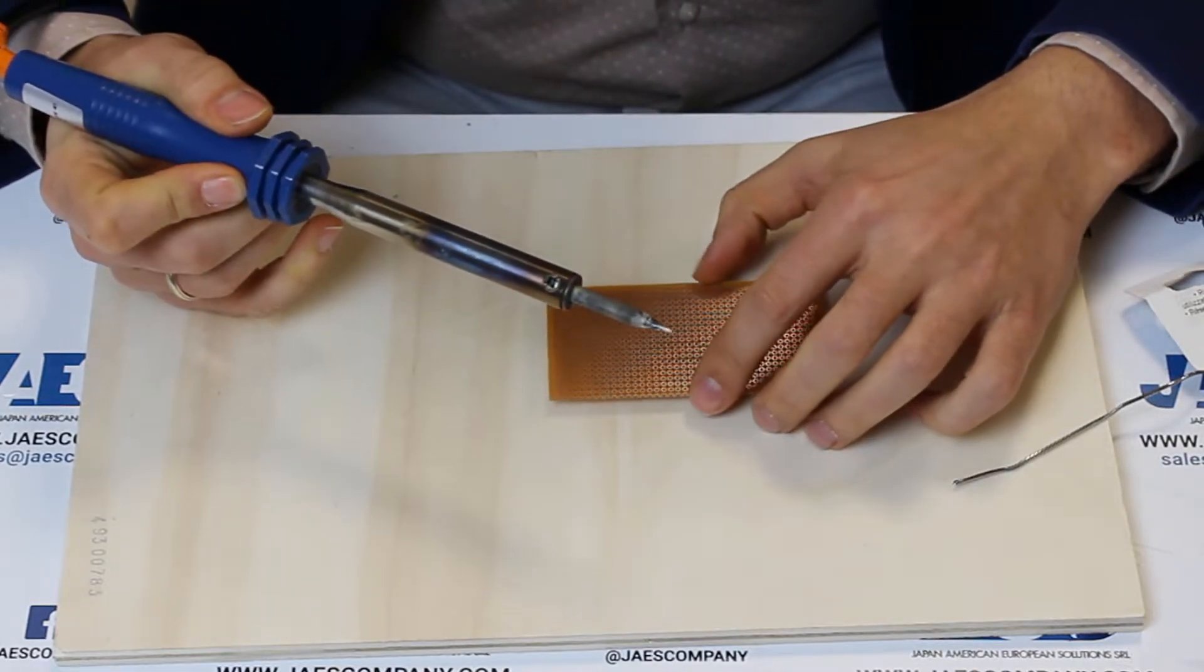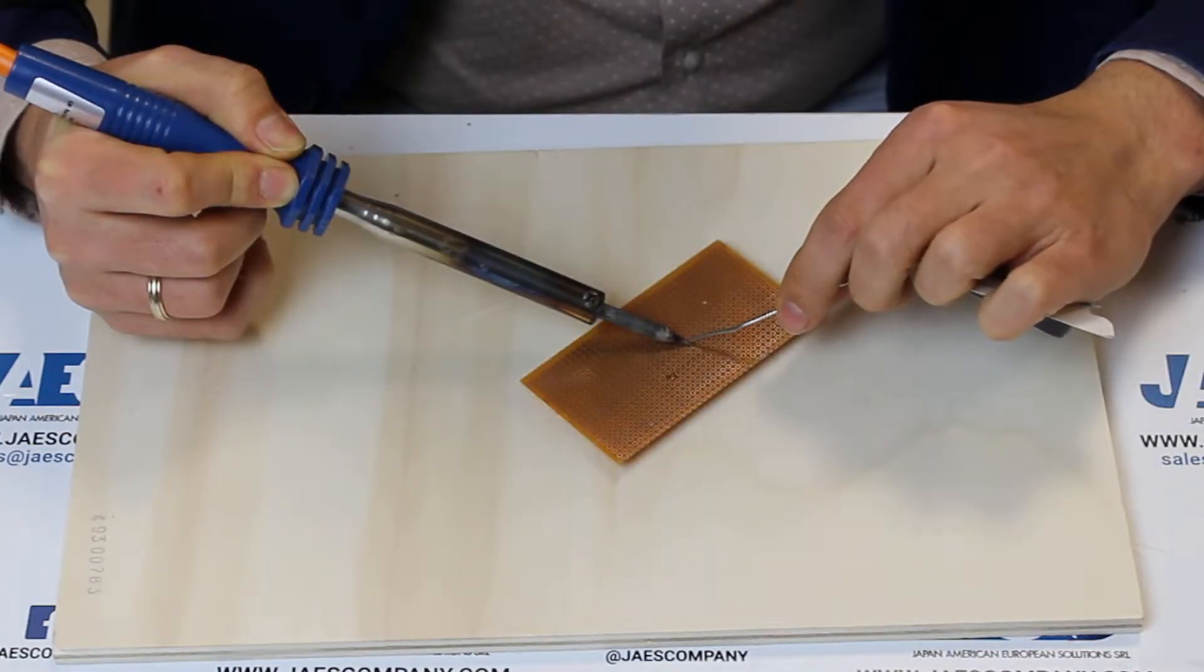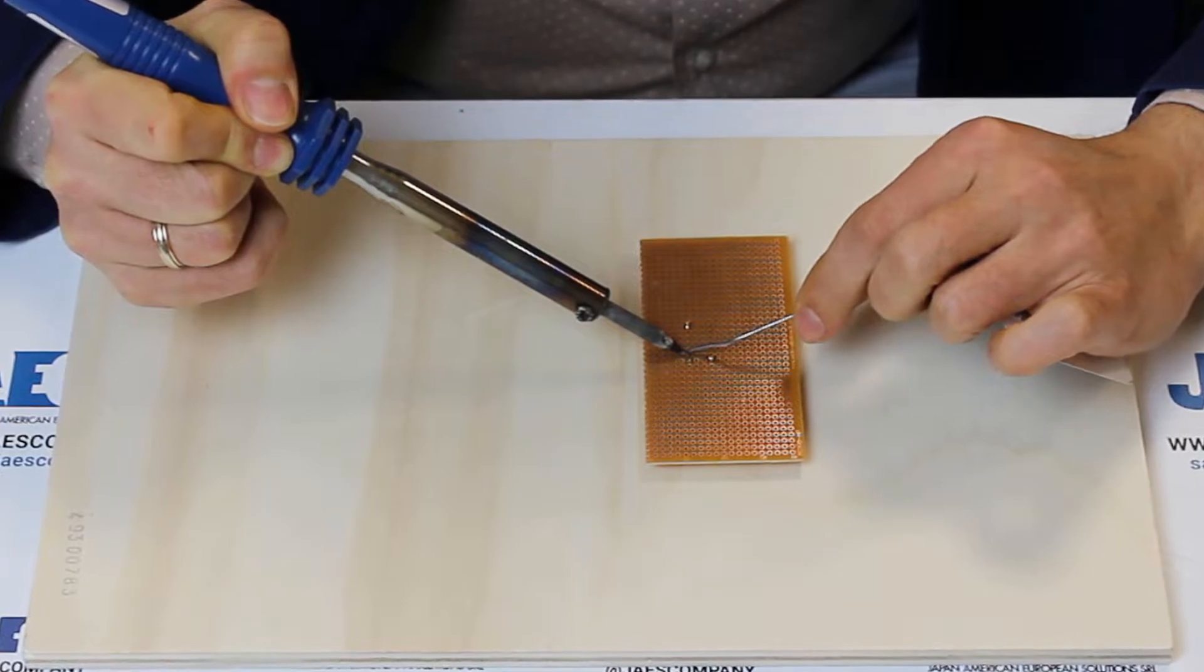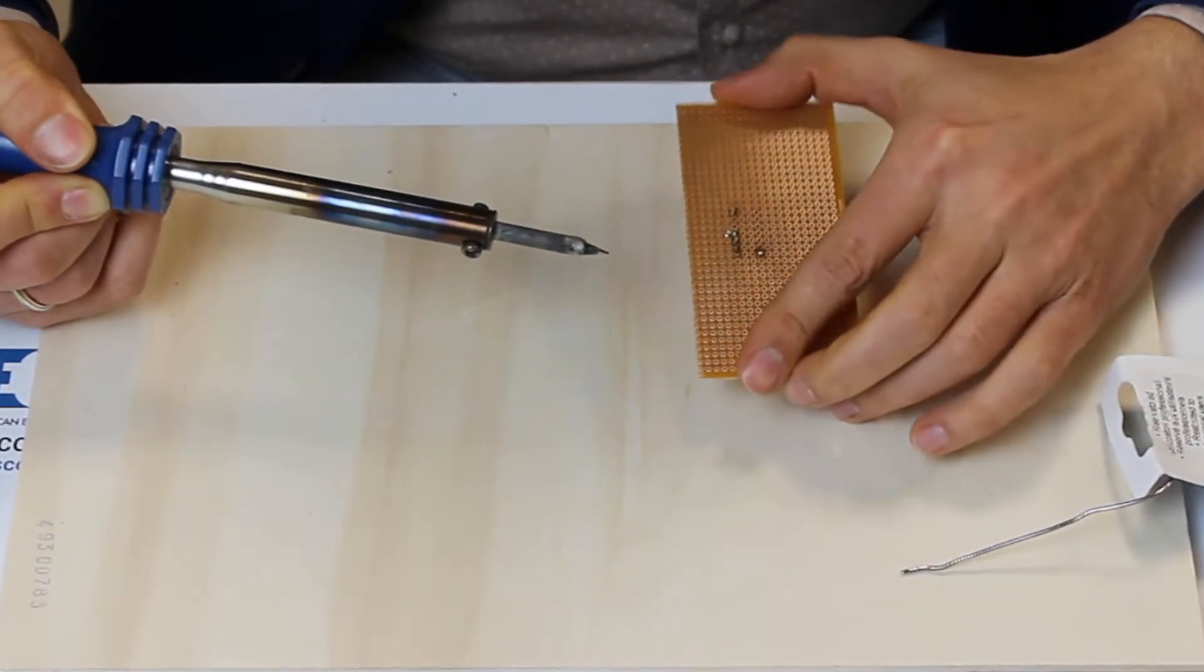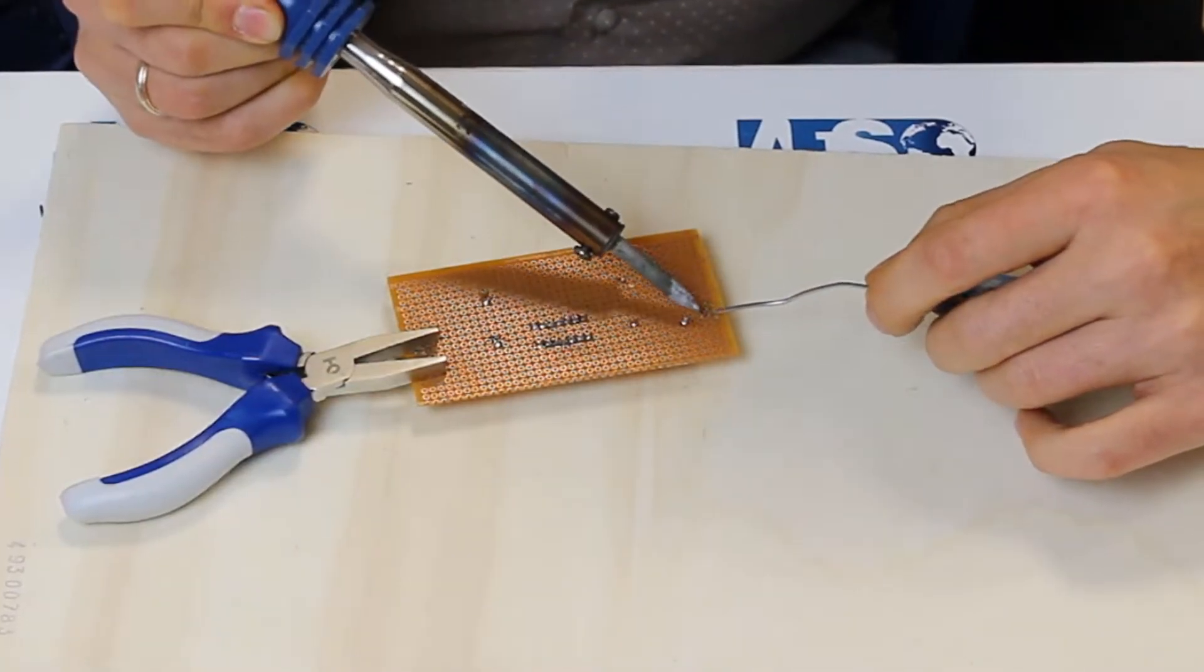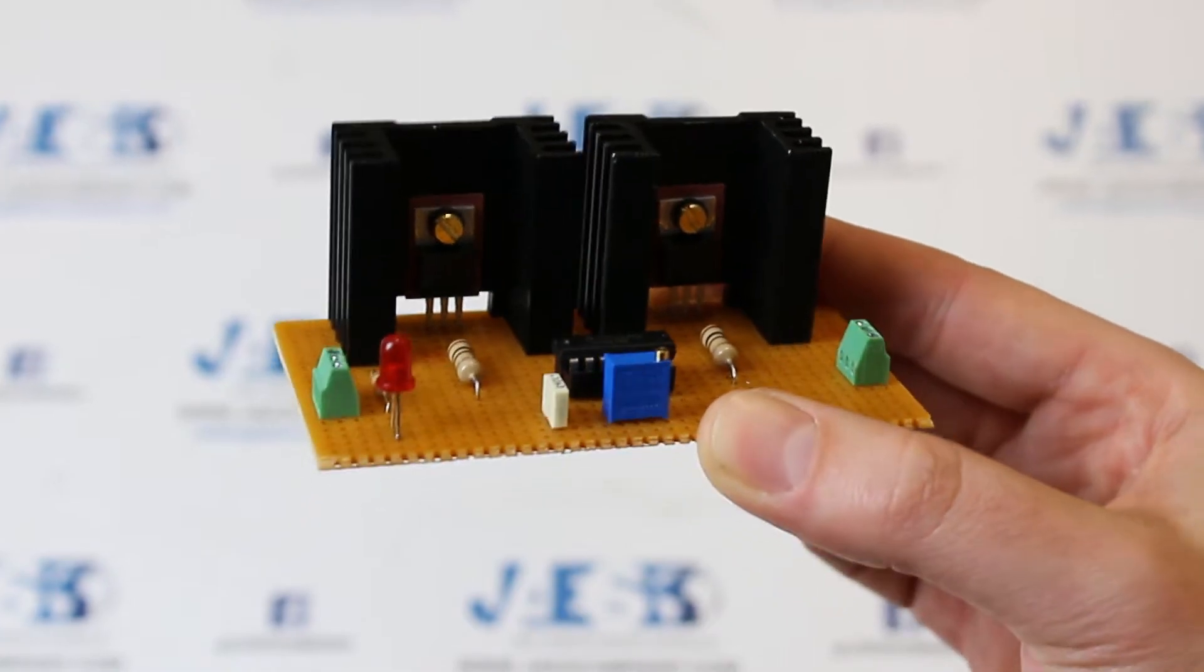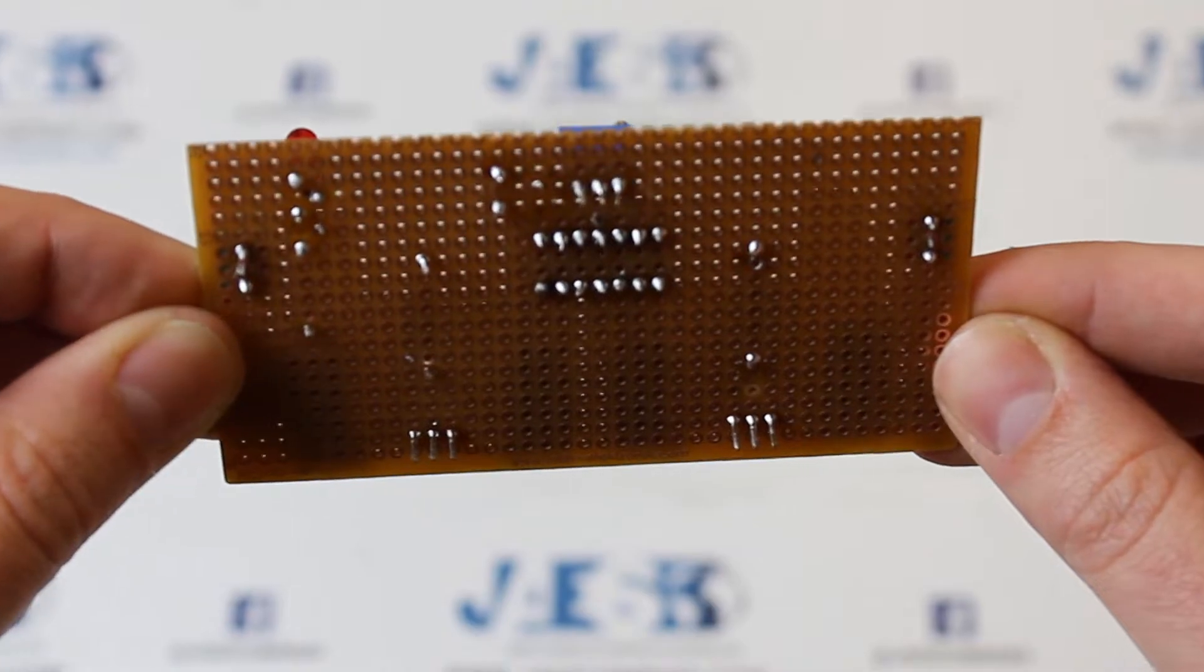Now let's start to weld all the components on the copper side of the board.